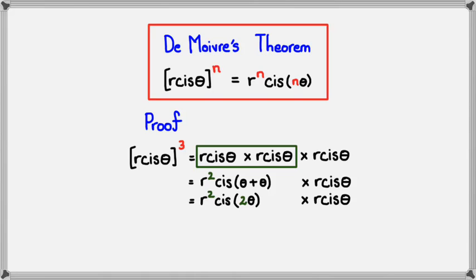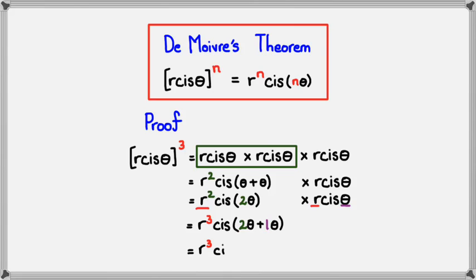Going back to the green box, you can simplify θ + θ to 2θ. So we have r squared cis 2θ, and this is all multiplied by r cis θ. From this point, applying the same multiplication rule, r squared times r gives us r cubed. And with the angles, cis becomes 2θ plus the 1θ from r cis θ.